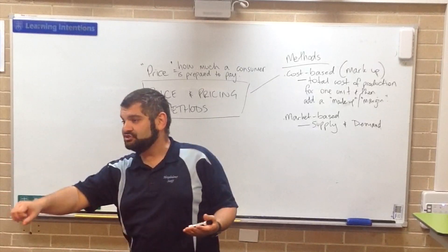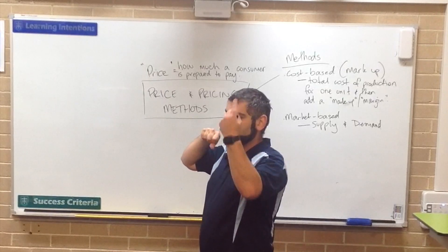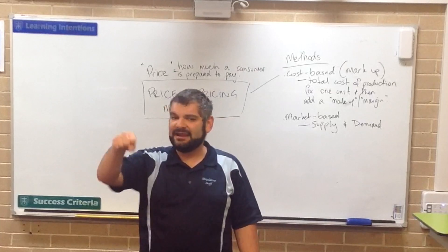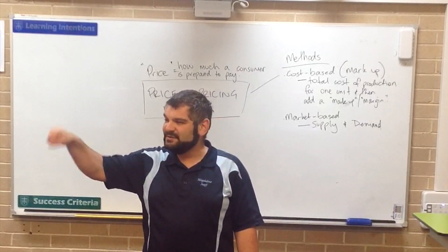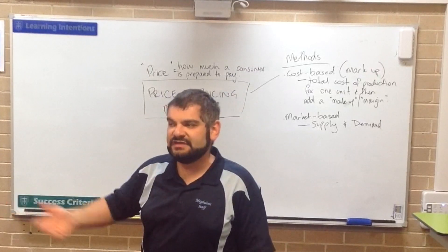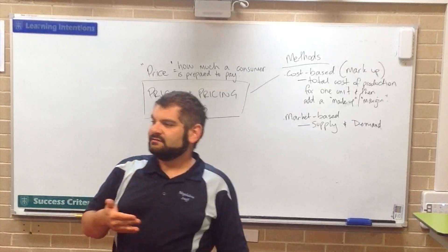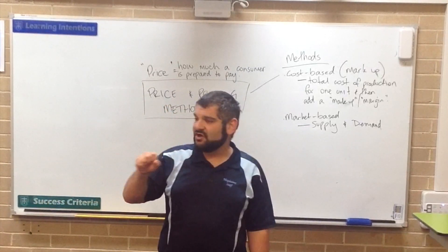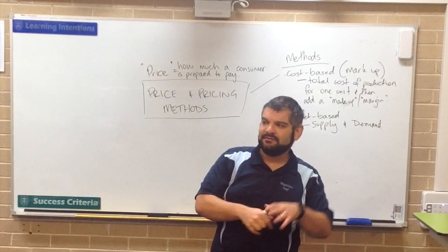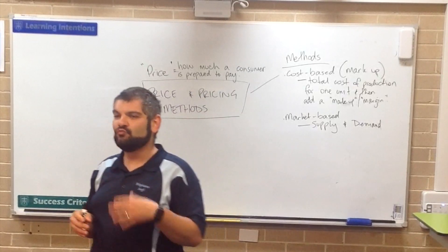When you restrict supply, so all of a sudden you've got less of something, what happens to the price? It goes up — because less of something becomes more valuable because there's less of it. If everyone had a million dollars, would a million dollars be worth anything? No, because everyone's got it. That's the only reason money has value — because not everyone's got it. So if we restrict items, all of a sudden there's less red t-shirts in the economy, the price goes up because they're more valuable, more limited, more rare.